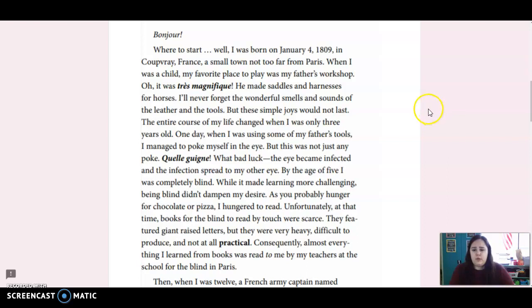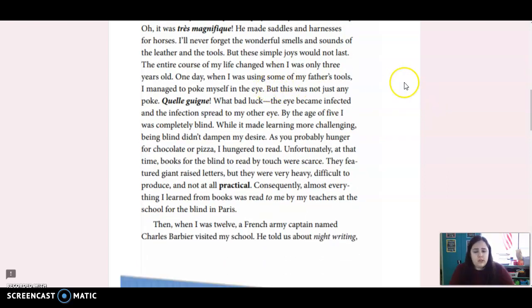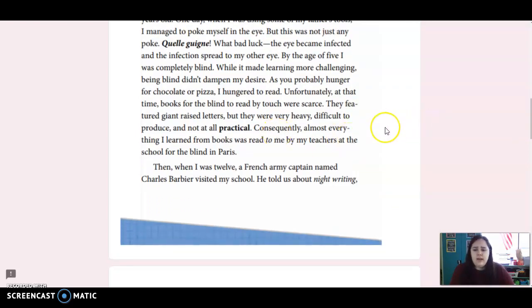The entire course of my life changed when I was only three years old. One day, when I was using some of my father's tools, I managed to poke myself in the eye. But this was not just any poke. Quel dommage. What bad luck. The eye became infected and the infection spread to my other eye. By the age of five, I was completely blind. While it made learning more challenging, being blind didn't dampen my desire. As you probably hunger for chocolate or pizza, I hungered to read. Unfortunately, at that time, books for the blind to read by touch were scarce. They featured giant raised letters, but they were very heavy, difficult to produce, and not at all practical. Consequently, almost everything I learned from books was read to me by my teachers at the school for the blind in Paris.